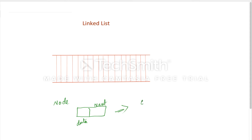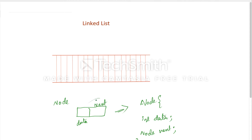We will declare this node. Suppose we will save integer data - int data. And next is also a node pointer. Just declare this node and the internals are explained. This is a simple node.